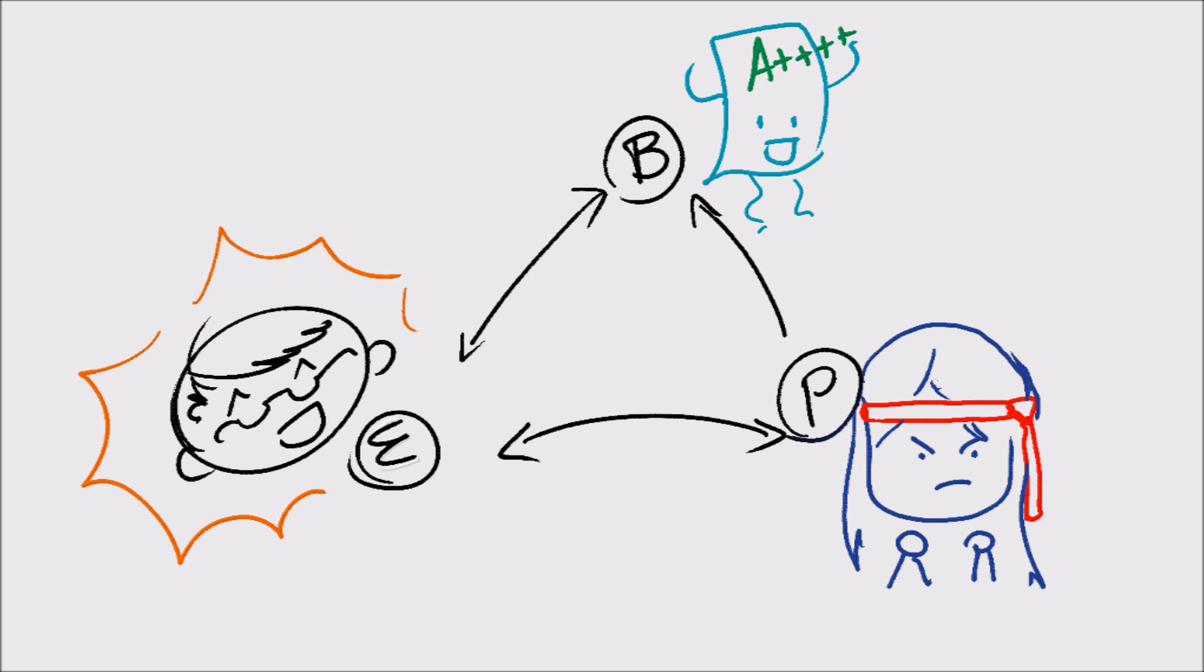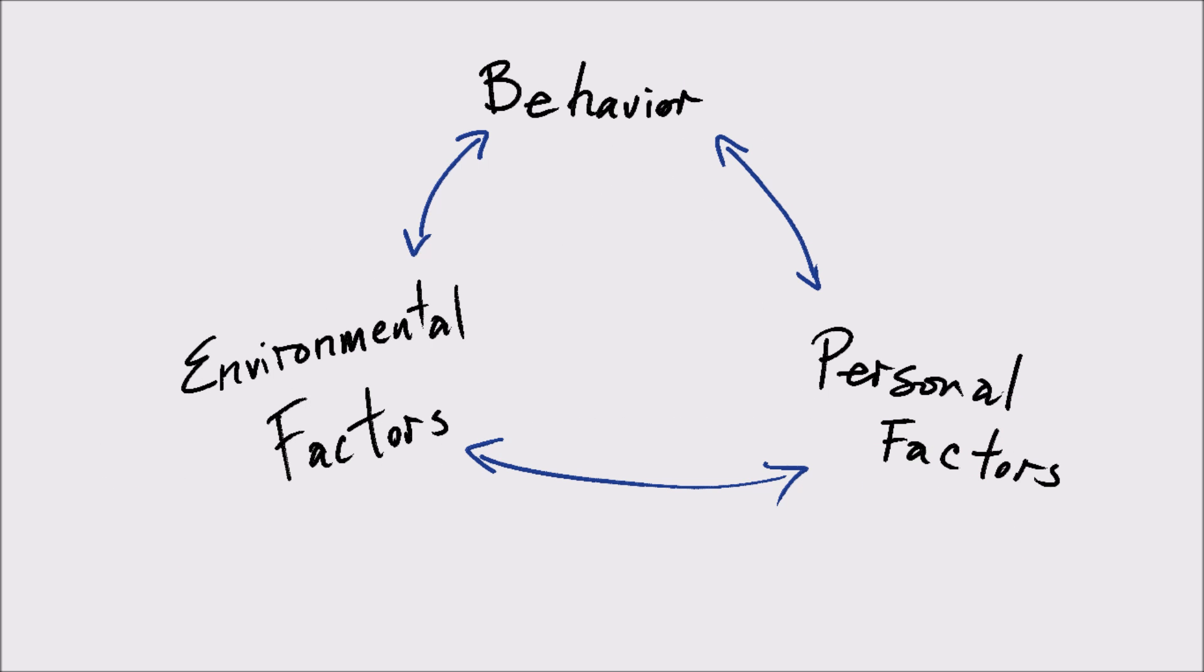This positive behavior has a result on her environment. Her teachers will have higher expectations and give her positive reinforcement, which then again will raise her self-efficacy, which then again stimulates positive behavior, so on and so forth in a cycle of success.